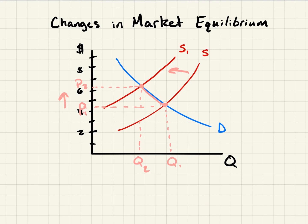That's how we would say it properly. If you think about it: there's less supply, so there's going to be a higher price for the people that are still supplying. And as the price goes up, the quantity demanded goes down. So this makes sense as well.